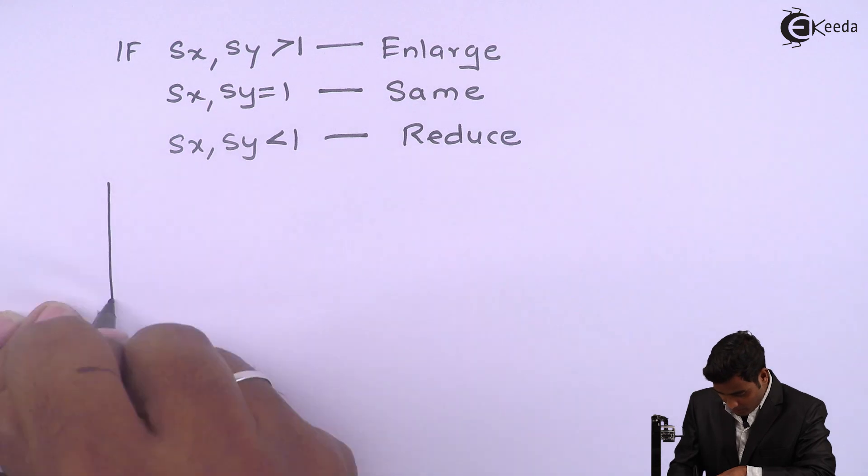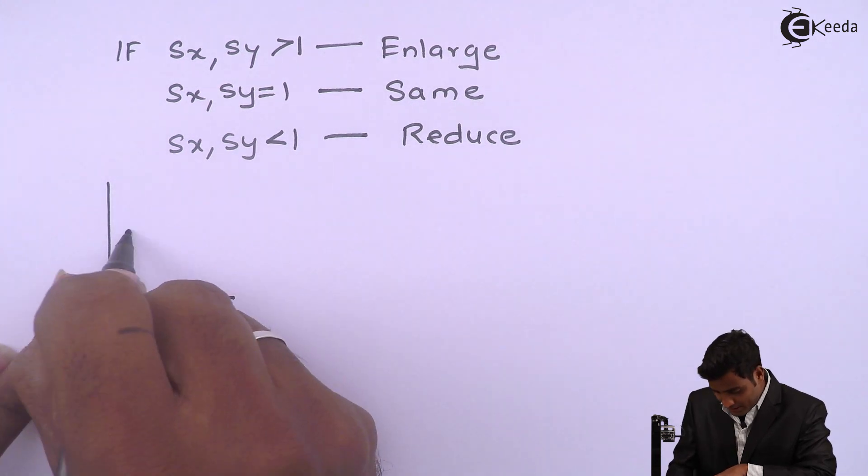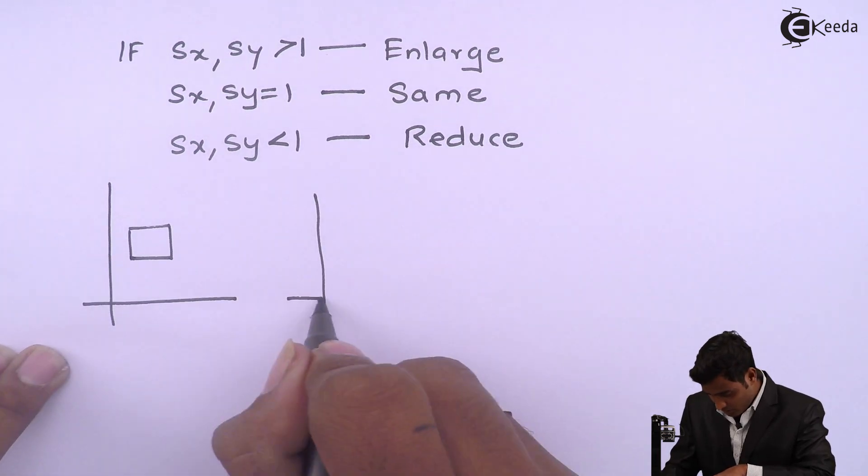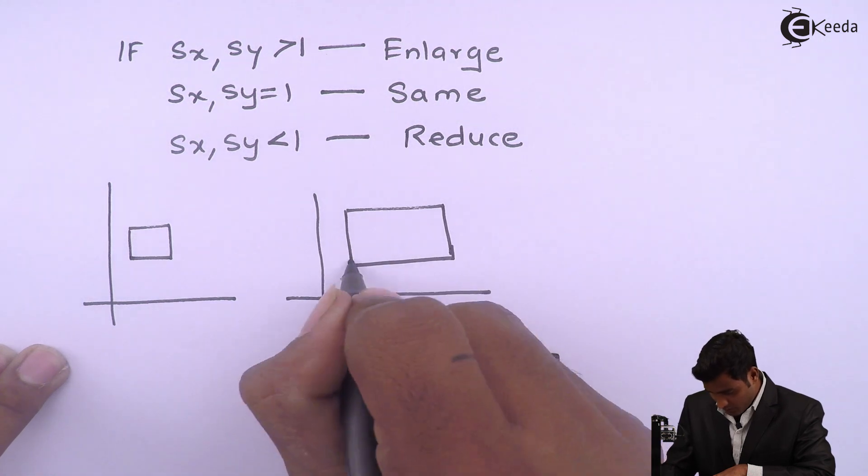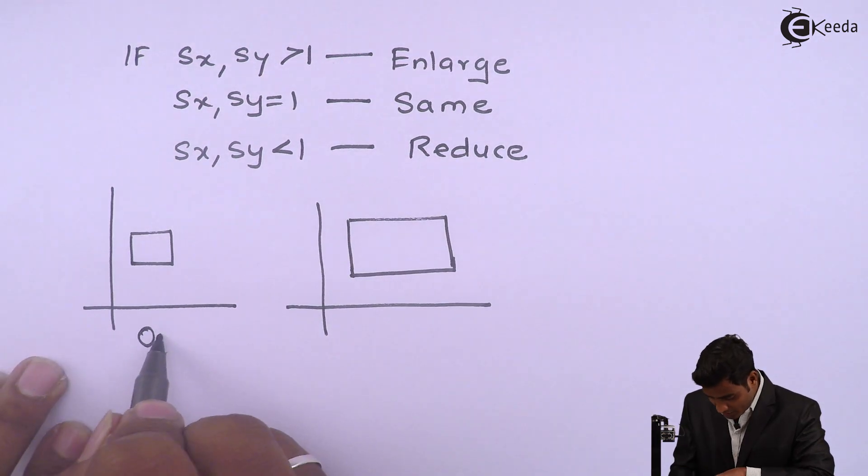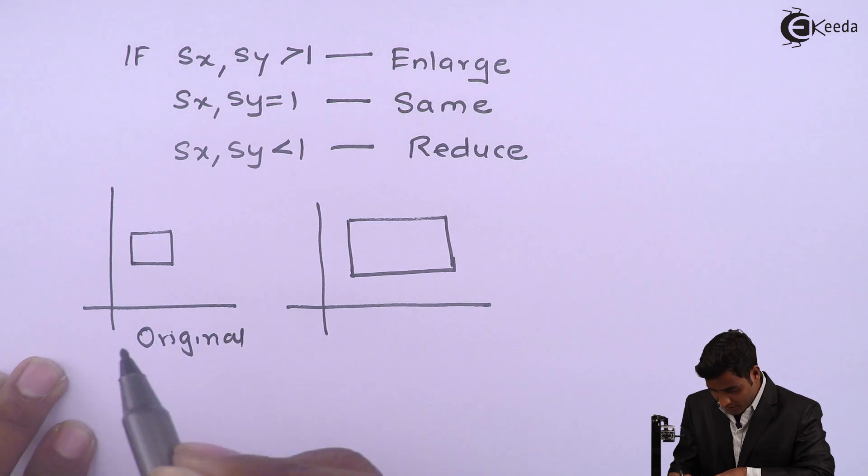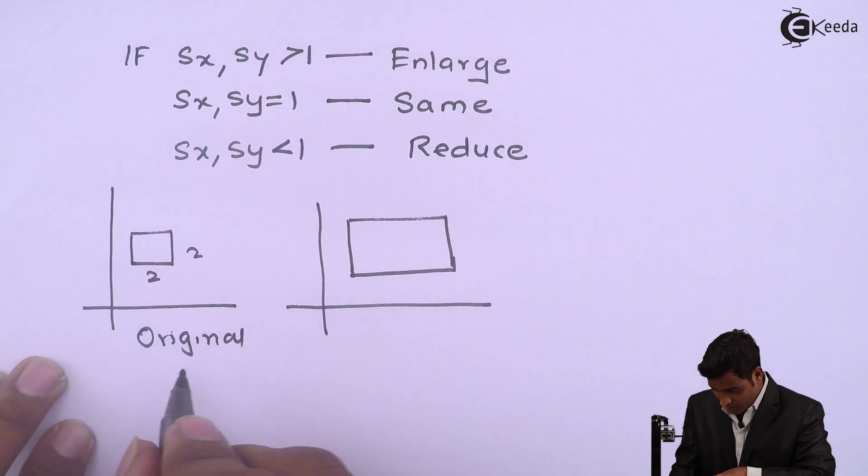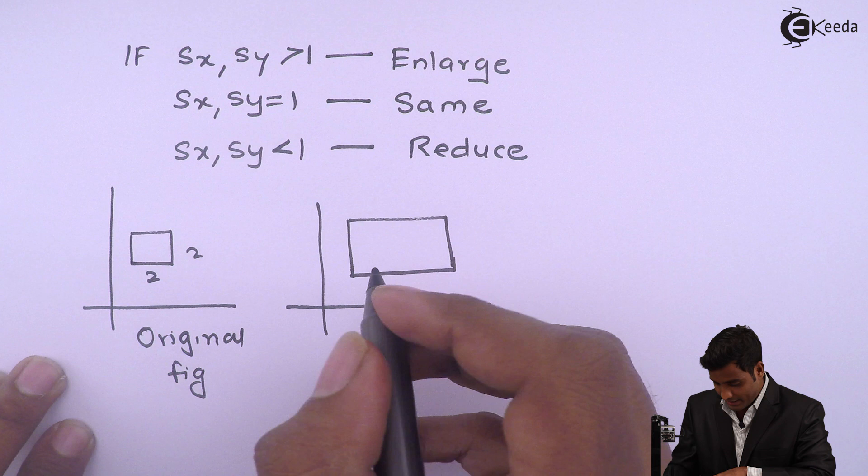So now I will take a example means how scaling is done. Consider a square now here I am enlarging means original figure dimension is 2 by 2.